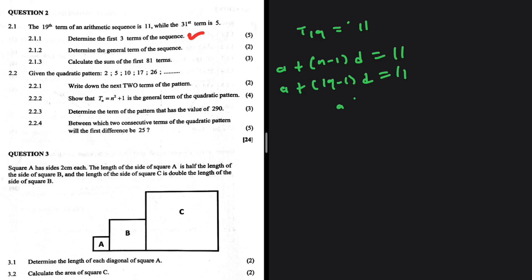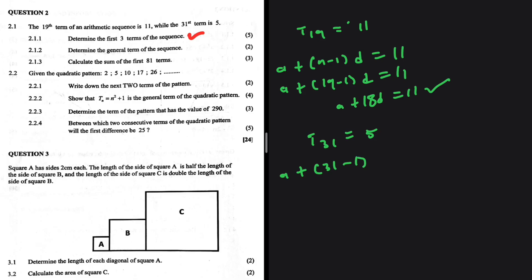This simplifies to a plus 18d equals 11. That is the first equation. For the second piece of information, t31 equals 5, and similarly a plus 31 minus 1 multiplied by d equals 5, so a plus 30d equals 5.